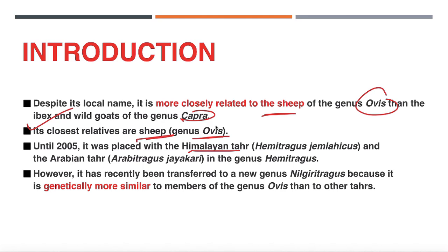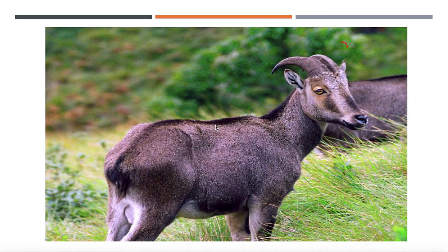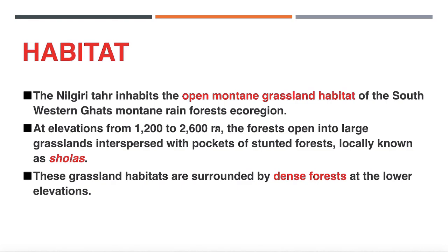Until 2005, Nilgiri Tahr was placed together with Himalayan Tahr and Arabian Tahr in the genus Hemitragus. But after that, because it is genetically more similar to sheep species under the genus Ovis, it was placed in a separate new genus. So although it is called a goat, it is more closely related to sheep. Its horns are curved and it is sexually dimorphic, meaning males and females are physically different.